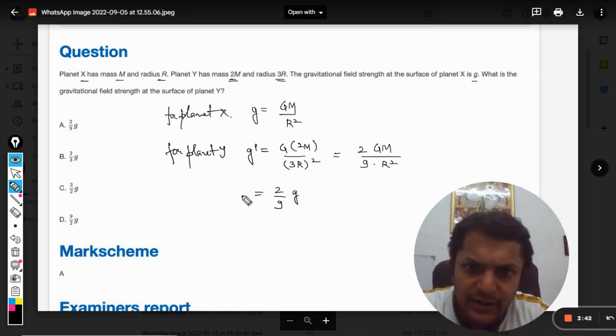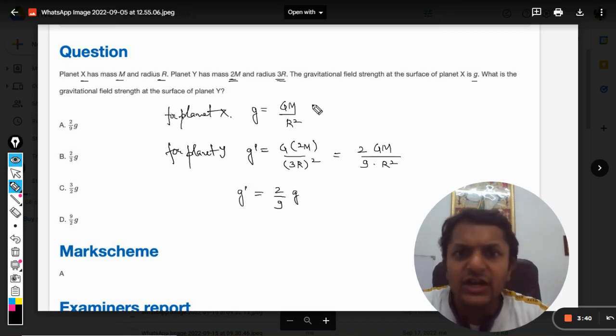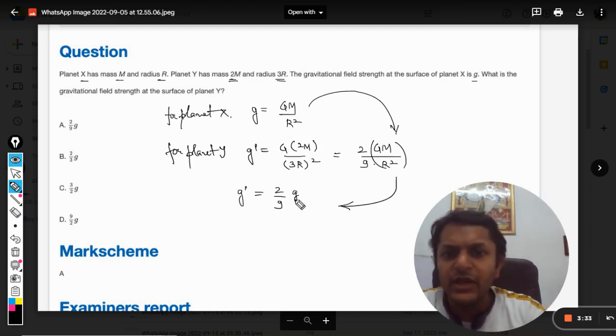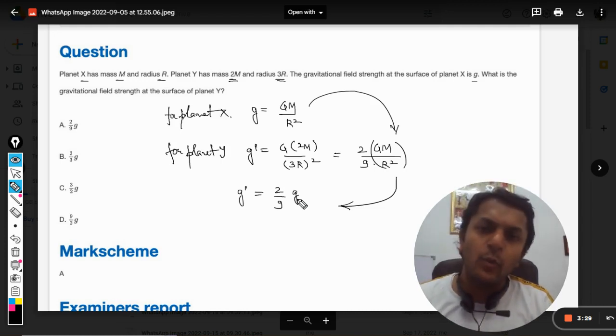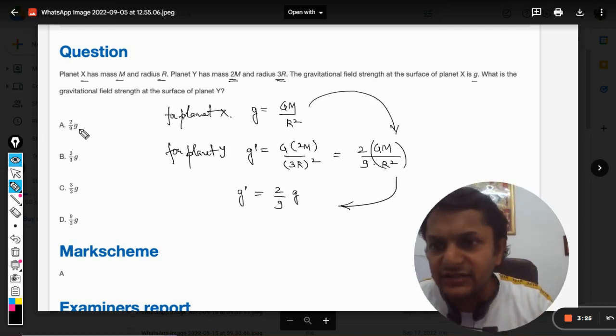This is g' and this is g, so I have substituted GM/R² from my first equation. G', the gravity on planet Y, will be equal to 2/9 times the gravity at the surface of planet X. So our answer will be A.